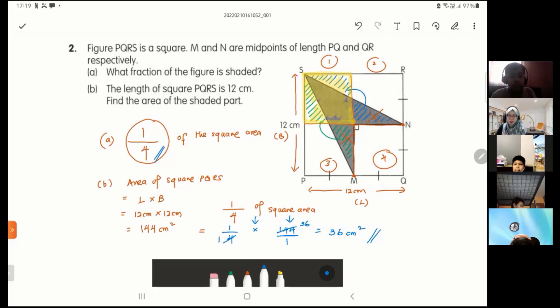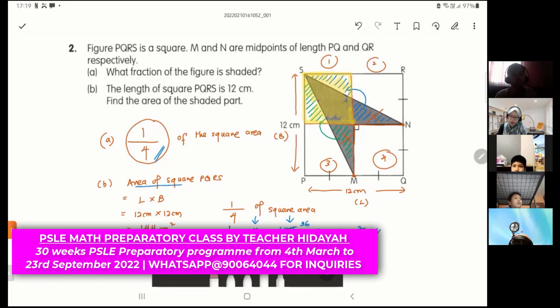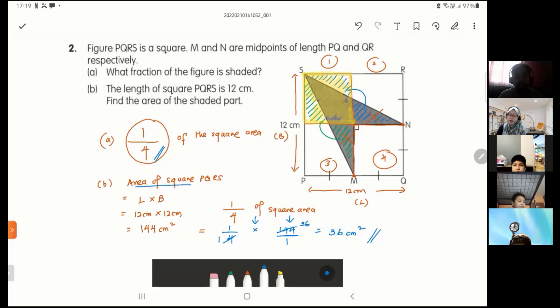So actually, you do not have to use area of triangle formula to solve this question. All I did was I find the area of the square, and then I take, since I know that the shaded part is one quarter of the square area, I take one quarter of square times square area. This is another way of going about area of triangle.